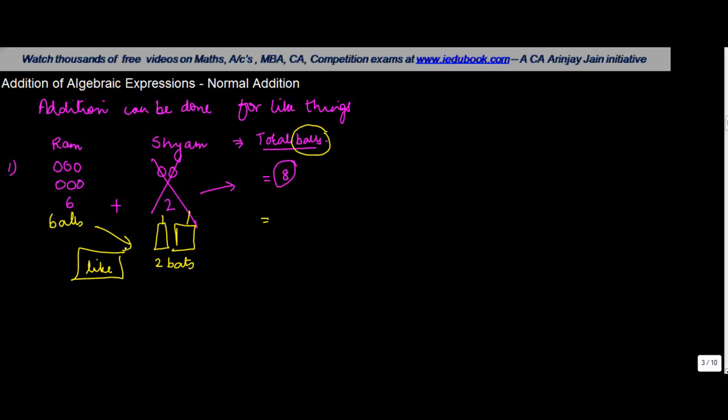Now you can't add balls with the bat; they have to be like. At best what you say is that he has six balls and two bats, unlike the first case when the total number of balls with the two of them was eight.